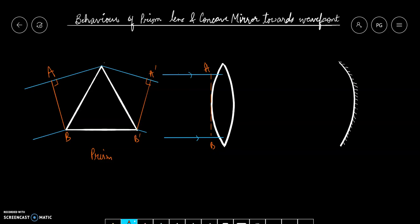Isi tariqe se lens ke case mein meri plain wavefronts aar rahe hai as we can see these are parallel rays. Aur humara convex lens in ko converging wavefronts mein convert kar dega. Here A dash B dash is one of the converging wavefront.